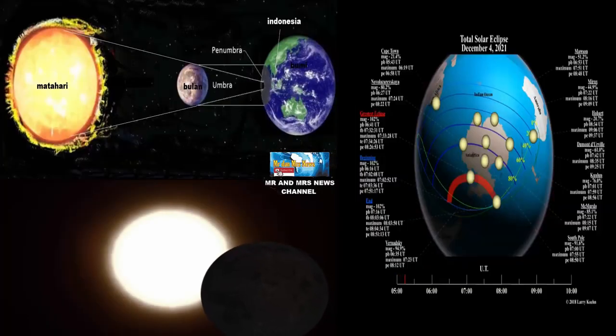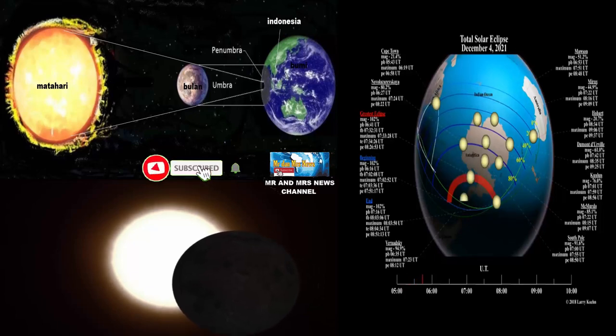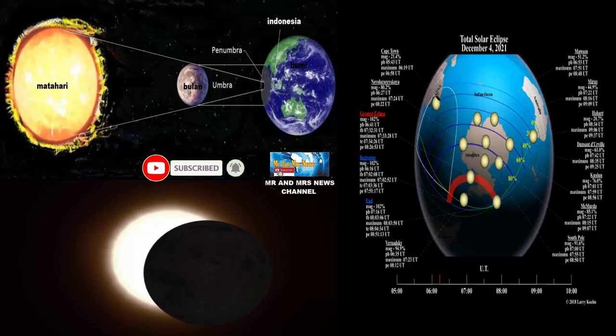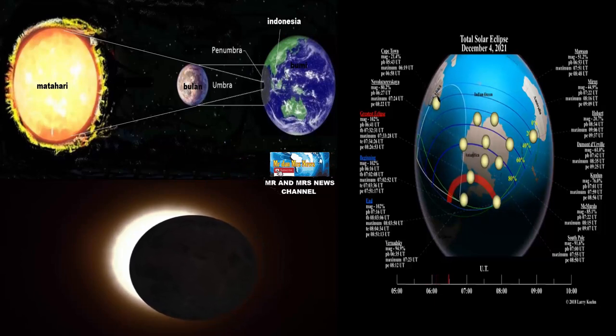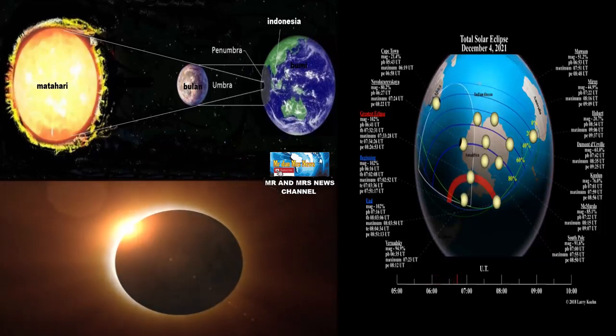According to the statement of resmi NASA, on 4 December 2021, there will be a total Gerhana Matahari Total in a number of countries in the world, such as Antarctica, Africa Selatan, and Atlantik.